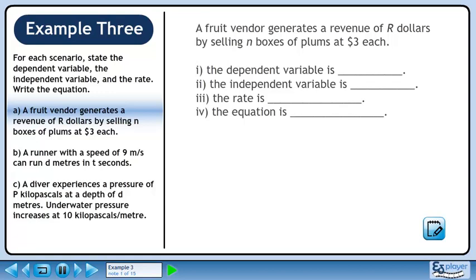In Part A, a fruit vendor generates a revenue of R dollars by selling n boxes of plums at $3 each.